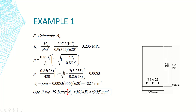Selecting three bars gives an actual area of reinforcement of 1935 mm², which is greater than the required 1827 mm² — adequate for our case.